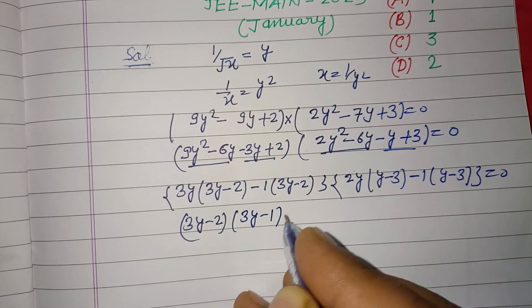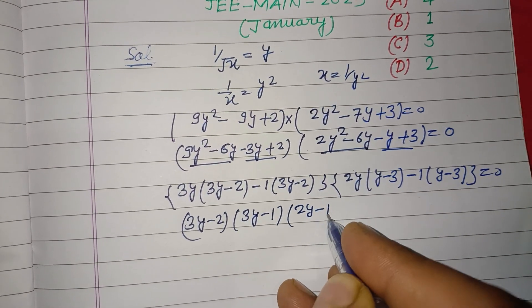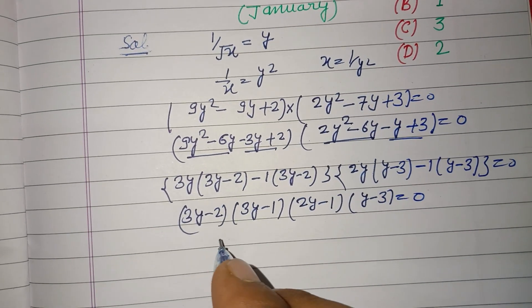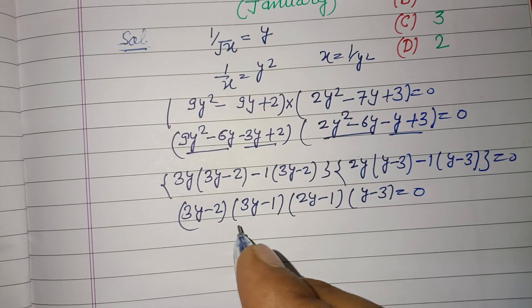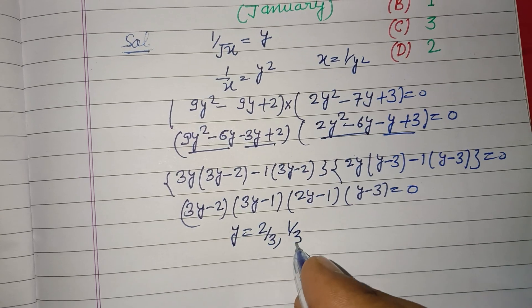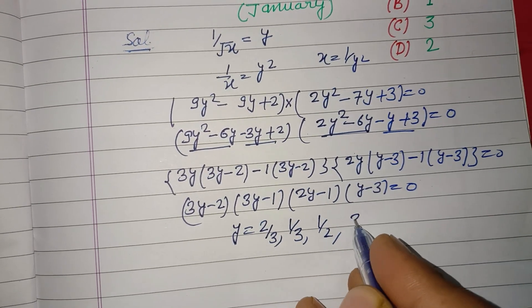From here, if we put them equal to 0, we get y = 2/3, 1/3, 1/2, and 3.